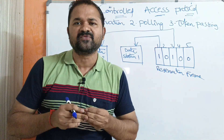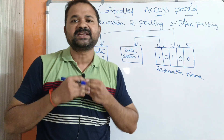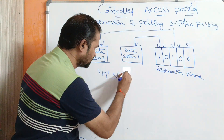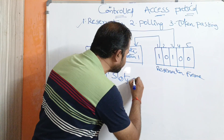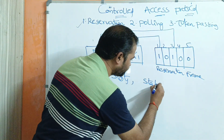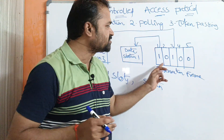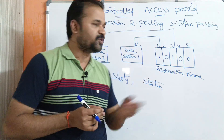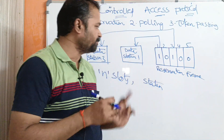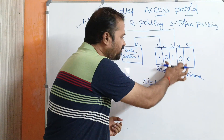So here we will have a reservation frame. The reservation frame is divided into n slots, where each slot represents a station. Here this is a reservation frame which contains totally five slots, where each slot represents a station.